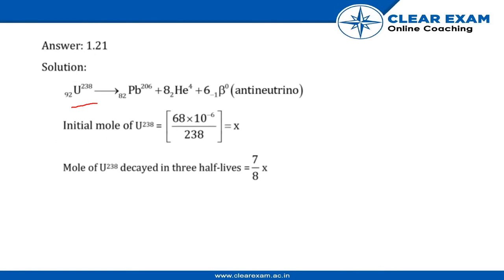The equation becomes: ₉₂U²³⁸ → ₈₂Pb²⁰⁶ + 8He⁴ + 6β⁺ (antineutrino). Initial mole of U-238 was (68 × 10⁻⁶)/238, let it be x.